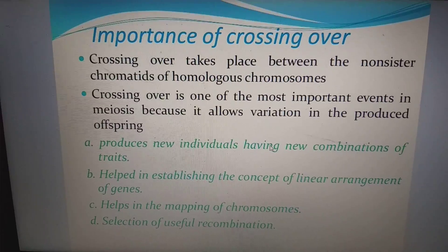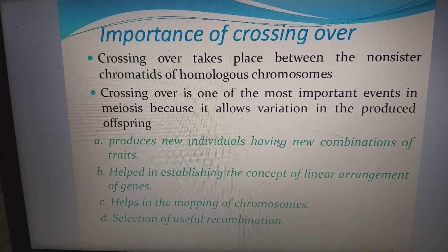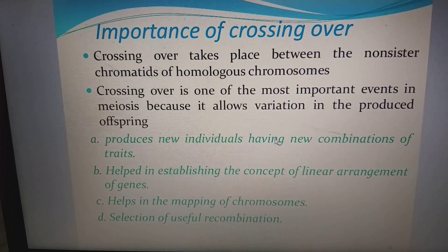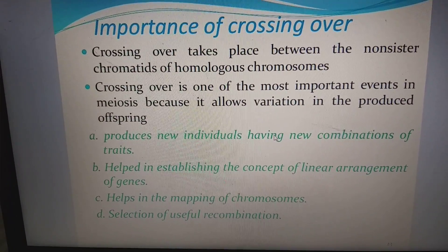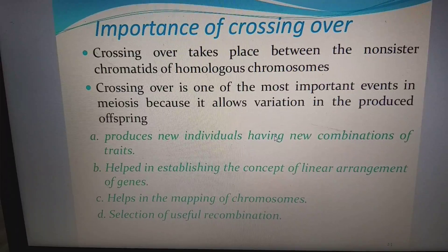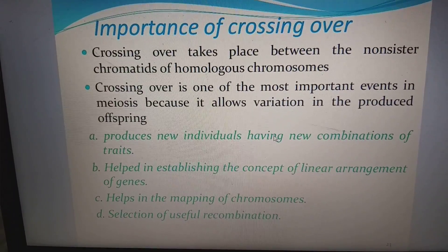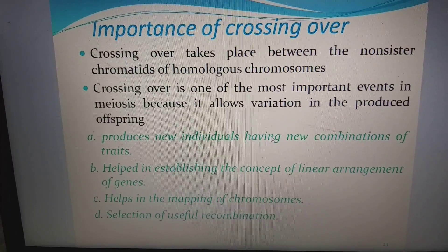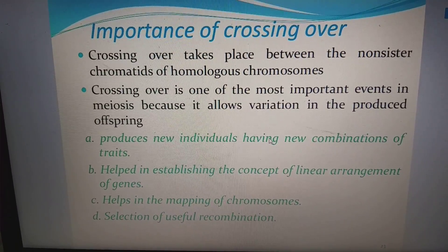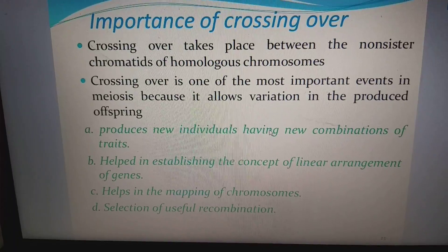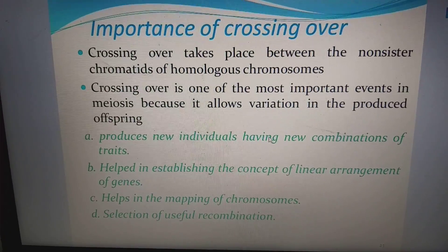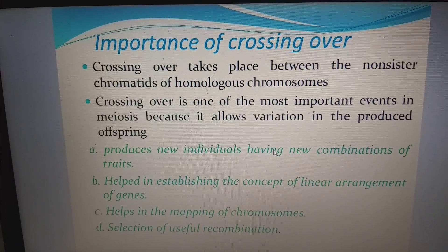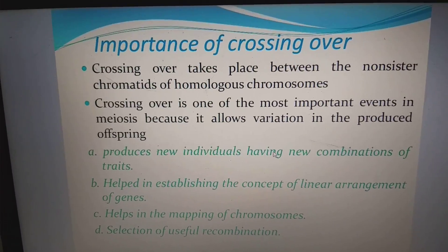Importance of crossing over: crossing over takes place between the non-sister chromatids of homologous chromosomes. It is one of the most important events in meiosis because it allows variation in the produced offspring. It produces new individuals having new combinations of traits, helped in establishing the concept of linear arrangement of genes, helps in the mapping of chromosomes, and allows selection of useful recombination. So new types of variations are developed through crossing over.